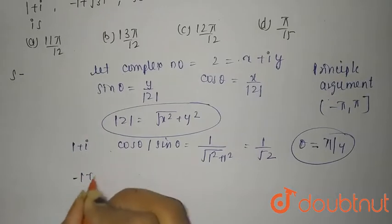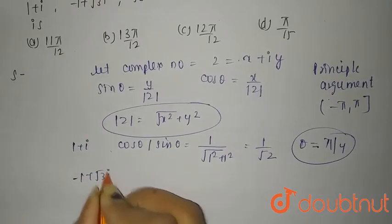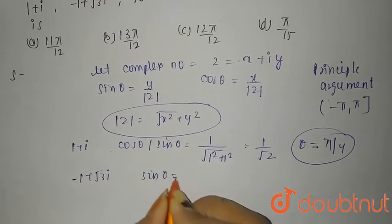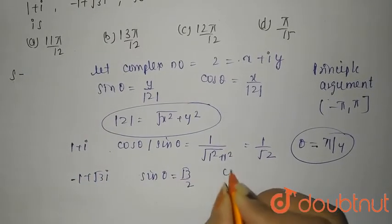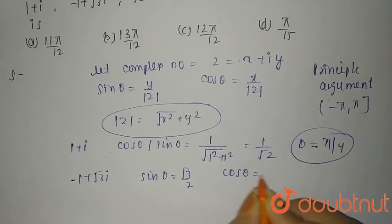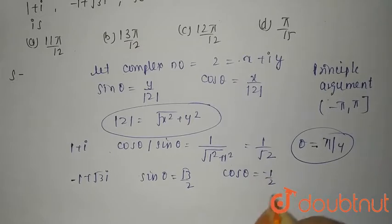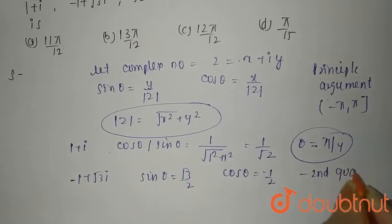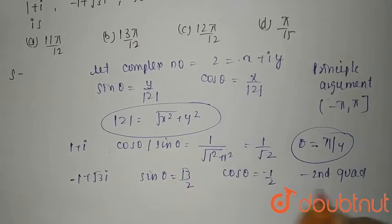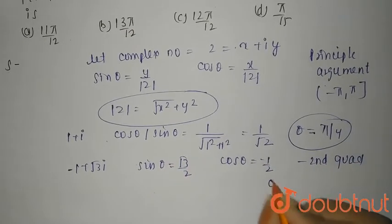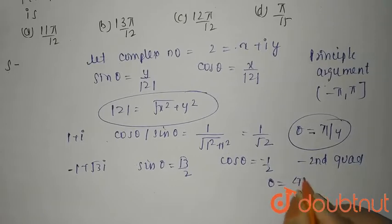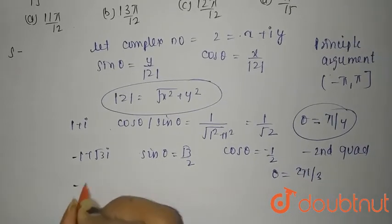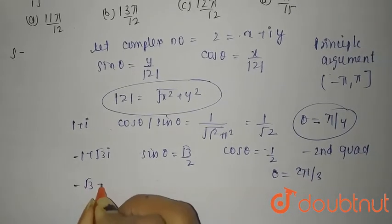For −1 + √3 i: sin θ = √3/2 and cos θ = −1/2. Since sin θ is positive and cos θ is negative, it lies in the second quadrant. Therefore θ = 2π/3.